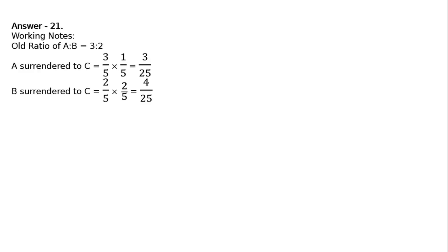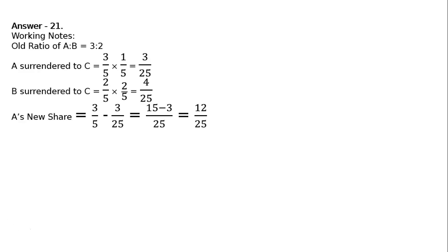Now, A's new share: old share minus surrendered share — 3 upon 5 minus 3 upon 25. LCM 25, in the numerator we will have 15 minus 3, that is equal to 12 upon 25.